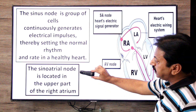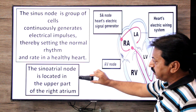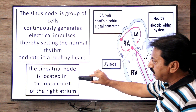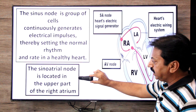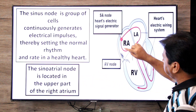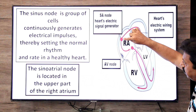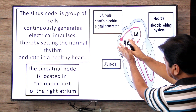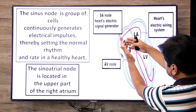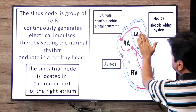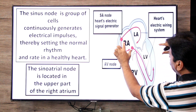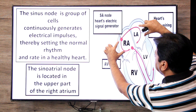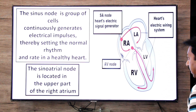The sinus node is located in the upper part of the right atrium. From here, signals spread to both the left atrium and the right atrium, causing both atria to contract together — this is called atrial systole.